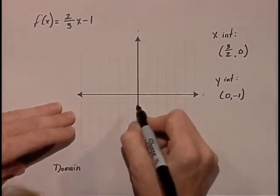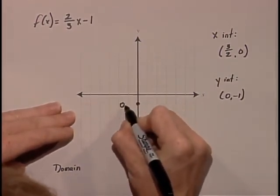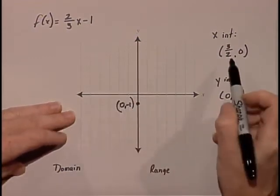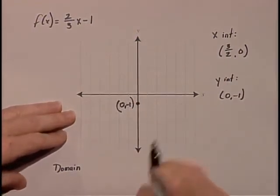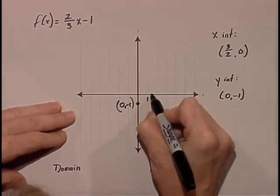Our y-intercept is at (0, -1). Our x-intercept is at 3/2, or 1 and a half, so that is between 1 and 2.